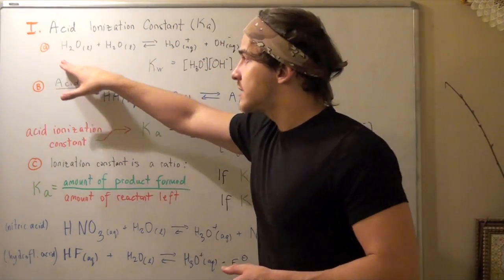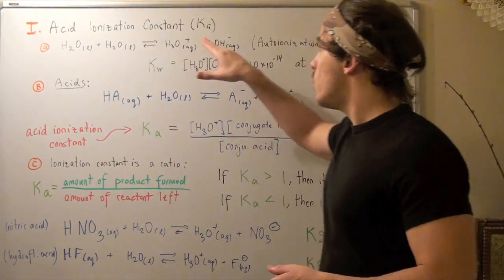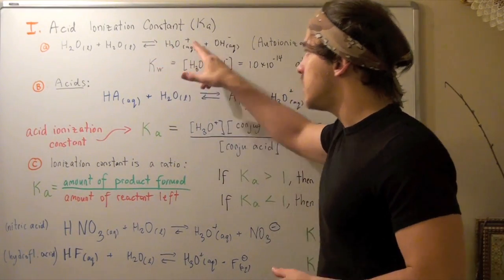In other words, if this is our acid, it will donate the H, creating an OH⁻ ion. And if this is our base, it will accept that H, creating a hydronium ion.